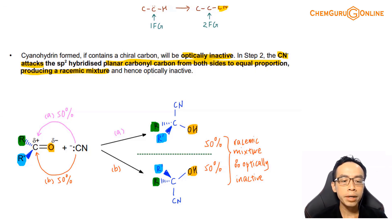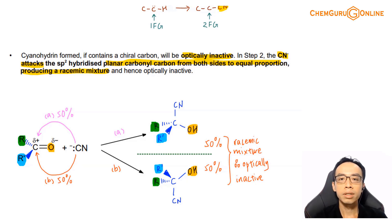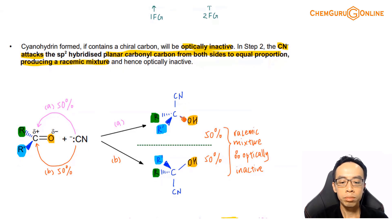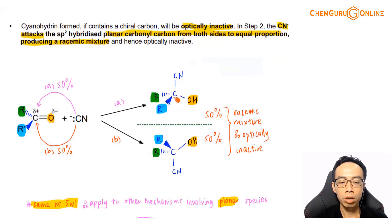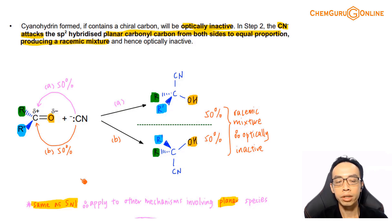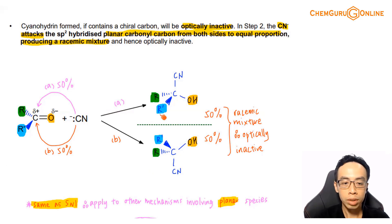If this idea seems familiar — that something being planar can be attacked from both sides to equal extent and therefore gives a racemic mixture — that is because we have learned this same idea previously in the SN1 mechanism, which involves the carbonyl carbon being trigonal planar.